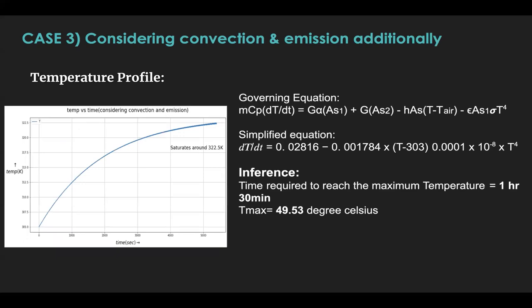In case 3, we shall consider the emission loss as well. You'll see that the governing equation has an additional term, epsilon A1 sigma T to the power 4. Again, simplifying and applying the appropriate boundary condition, we see that the time required to reach the maximum temperature is 1.5 hours and the maximum temperature is nearly 49.53 degrees Celsius.